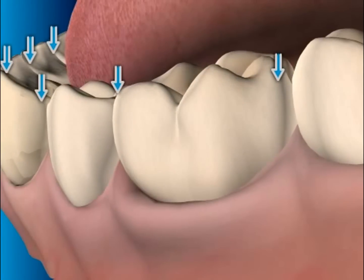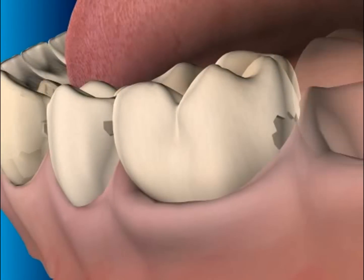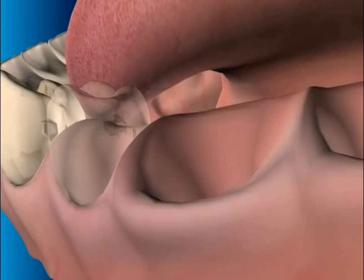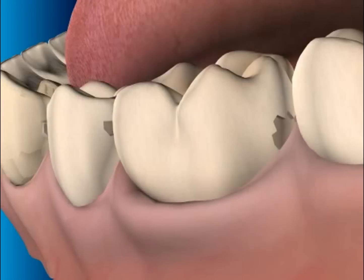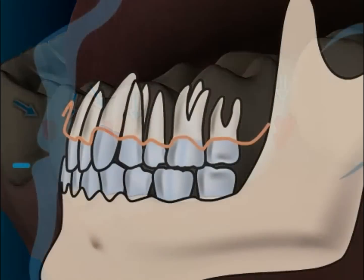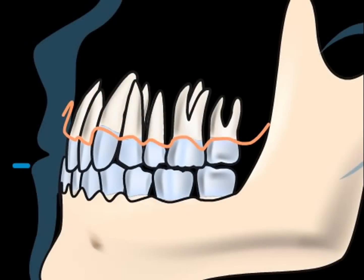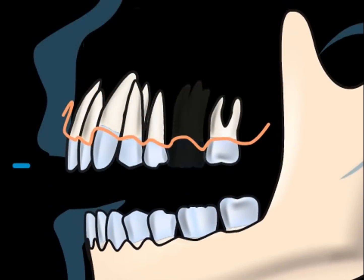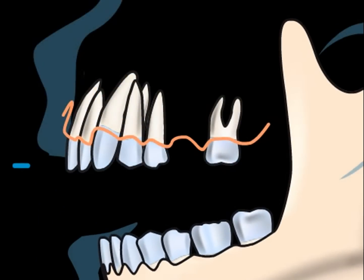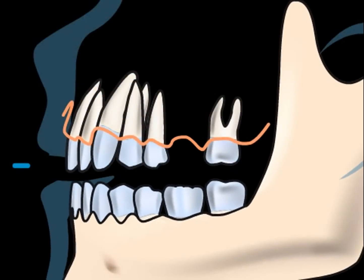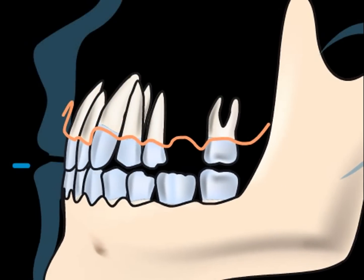If the teeth didn't naturally want to move towards the front, one would eventually develop gaps between the teeth. However, in places where a tooth is missing, a typical consequence is that the teeth will tilt into the existing gap due to the mesial drift.